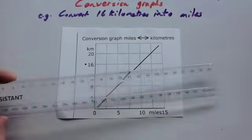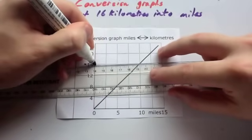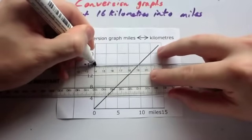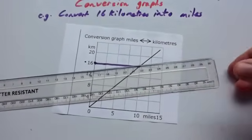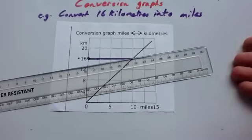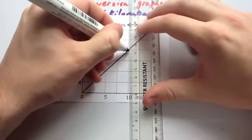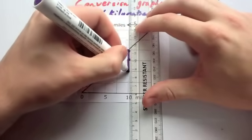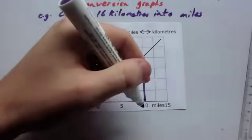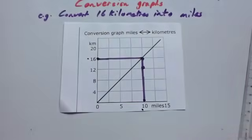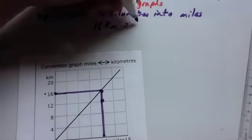So then what you can do is again, you're going to get your ruler and you're going to draw across to the line and then down from the line. And you would find, now you make sure that's nice and straight and accurate, and you would find that the answer would be 10 miles. So 16 kilometers equals 10 miles.